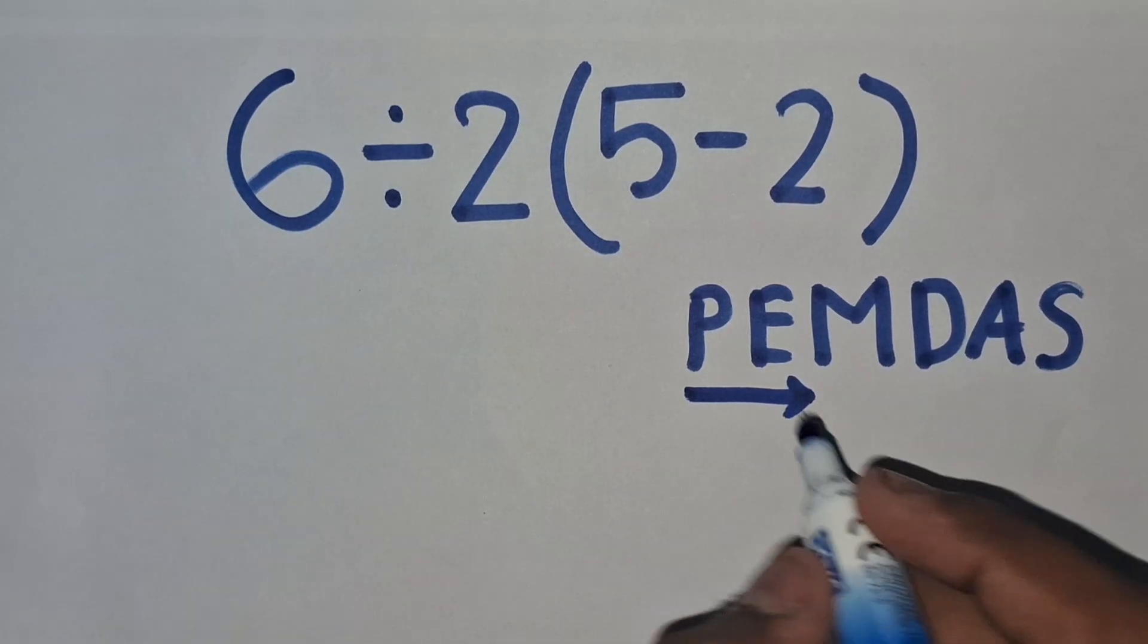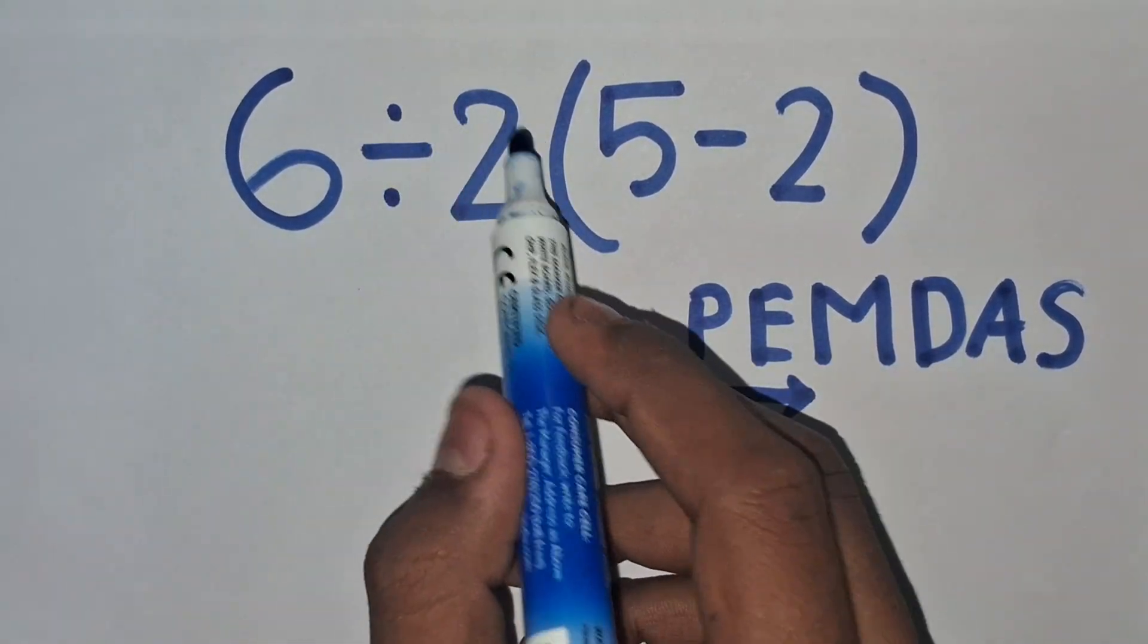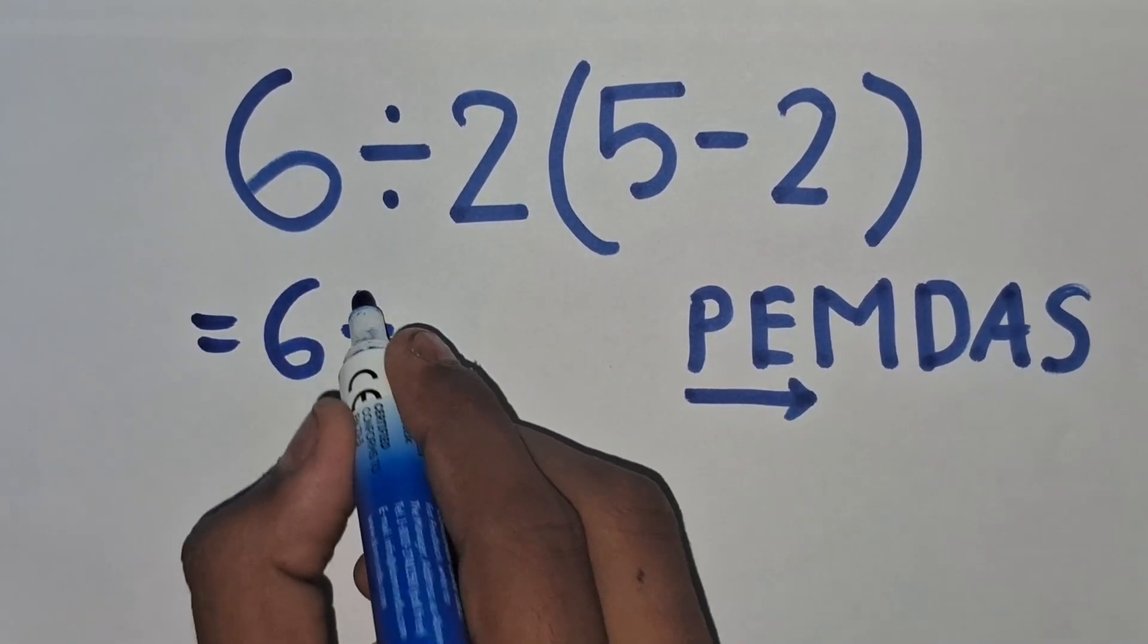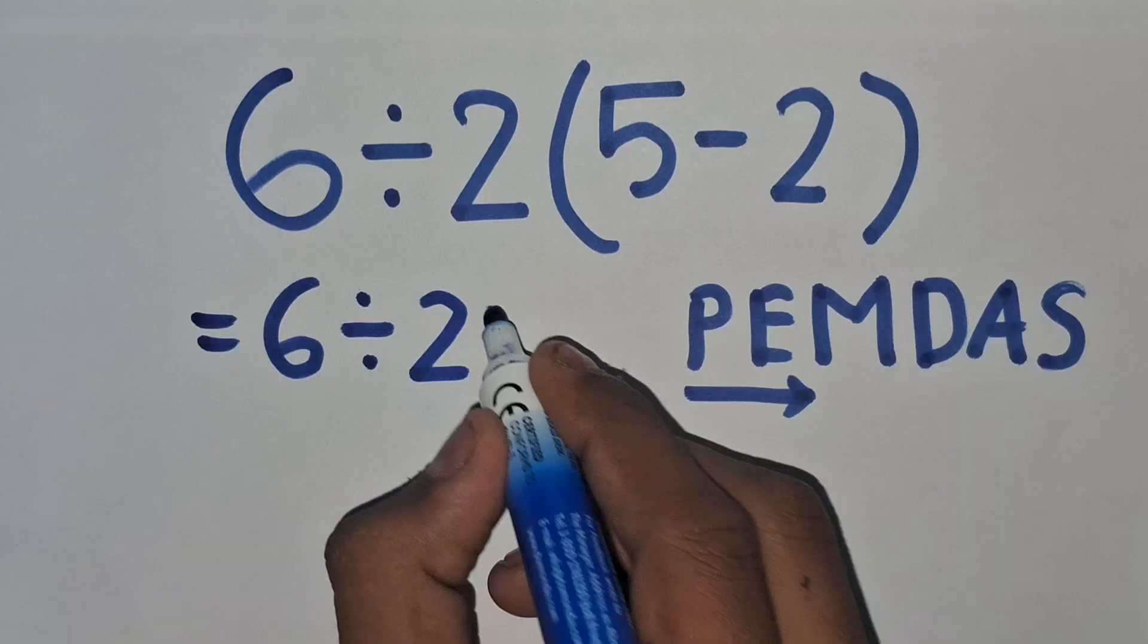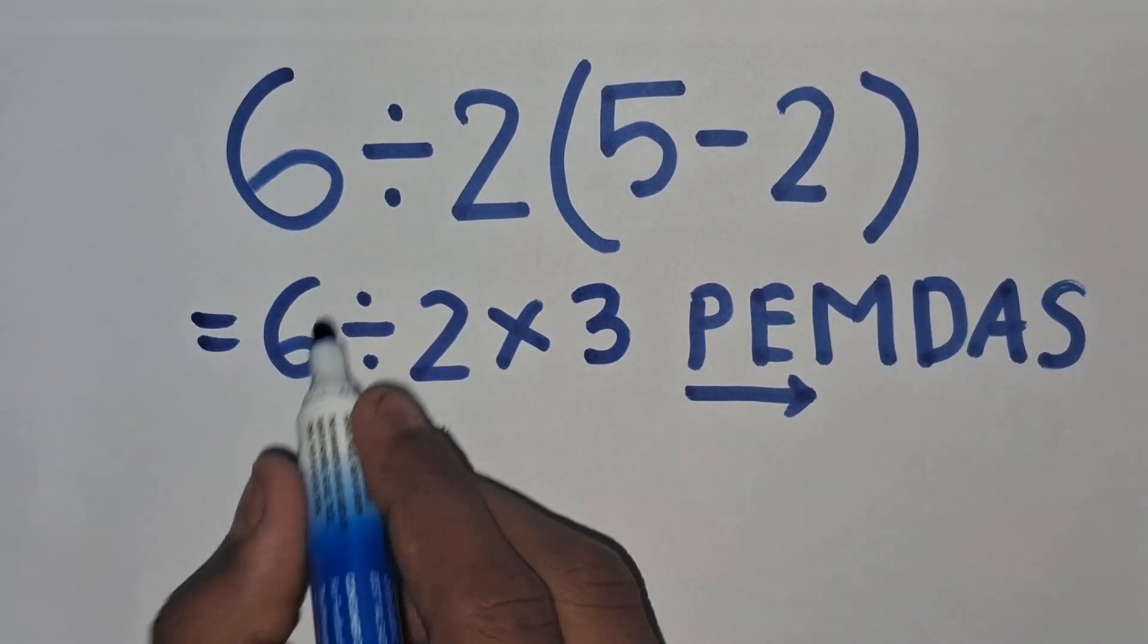According to this rule, first we have to solve this bracket, then this division, and then this multiplication. So 6 divided by 2 times 5 minus 2 equals 3. Now we have to solve from left to right.